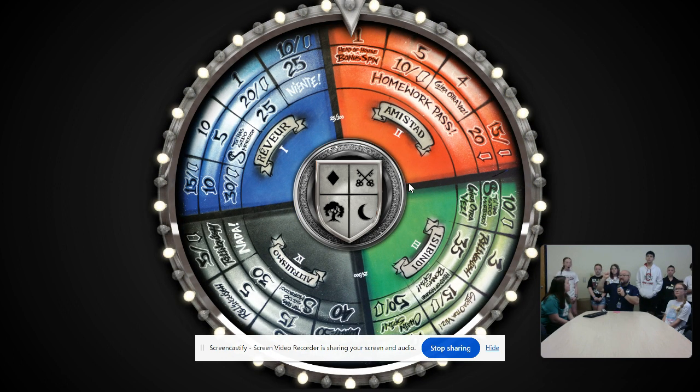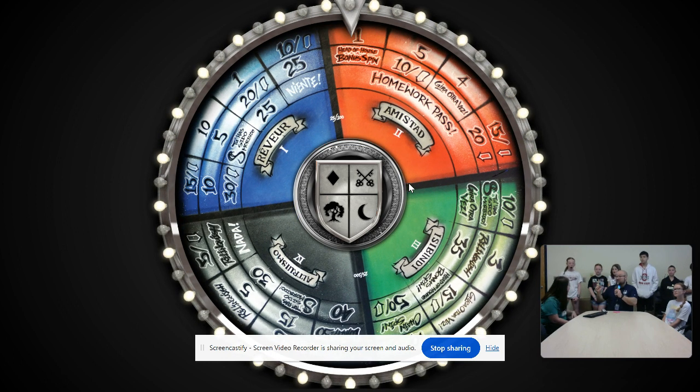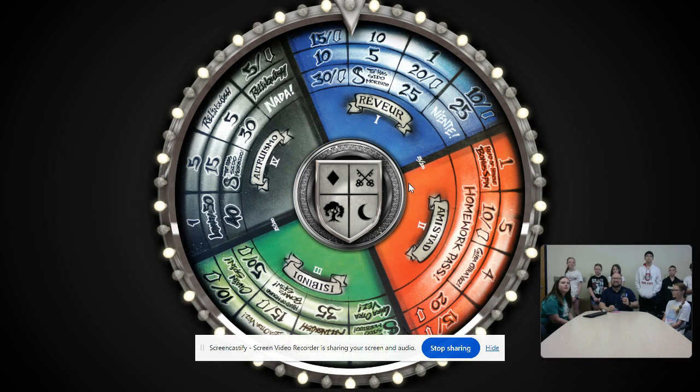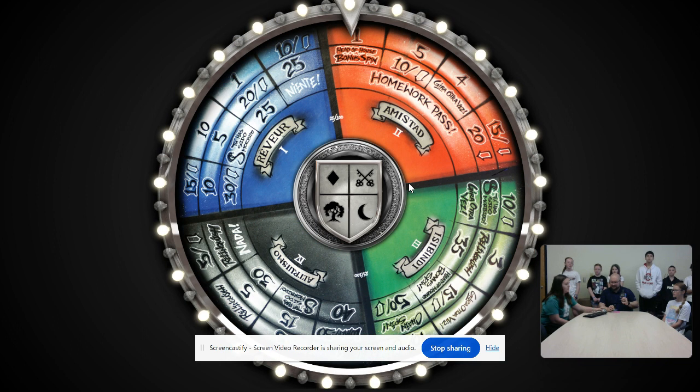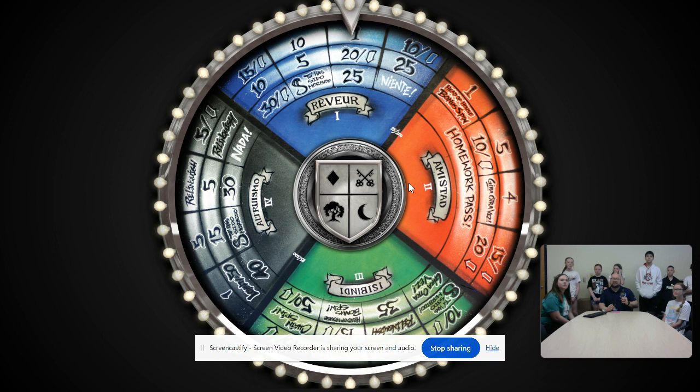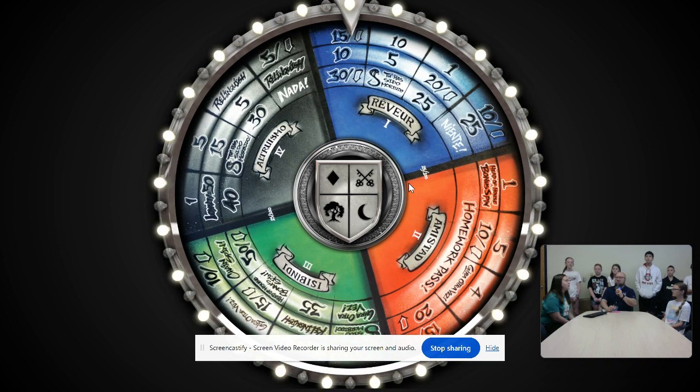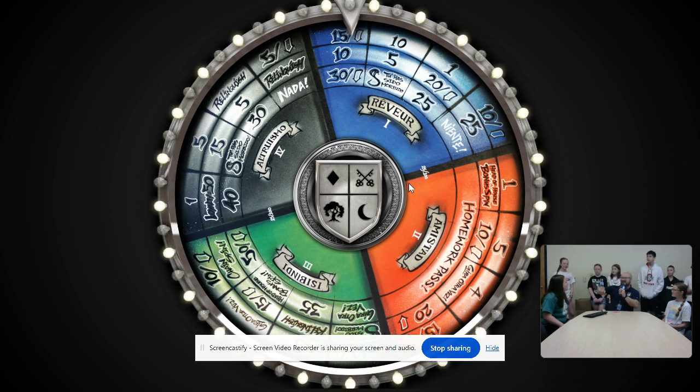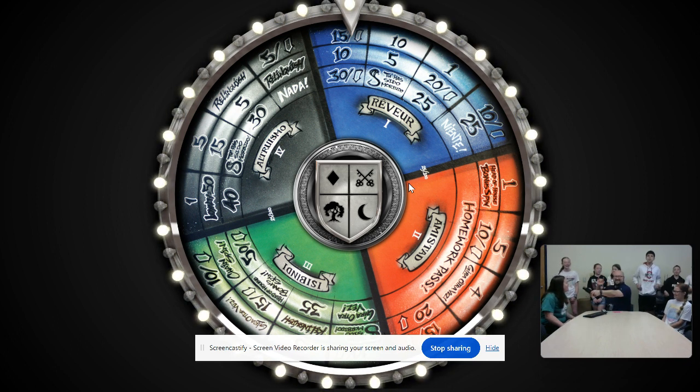25 points and a bonus spin, so you get to spin one more time. Whatever the top lands on, that's what you're going to get. 25 and 15 is 40 points for Isa Bindi! Isa Bindi wins!